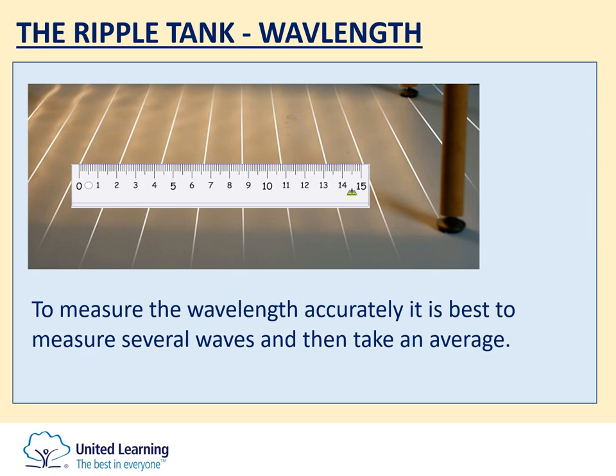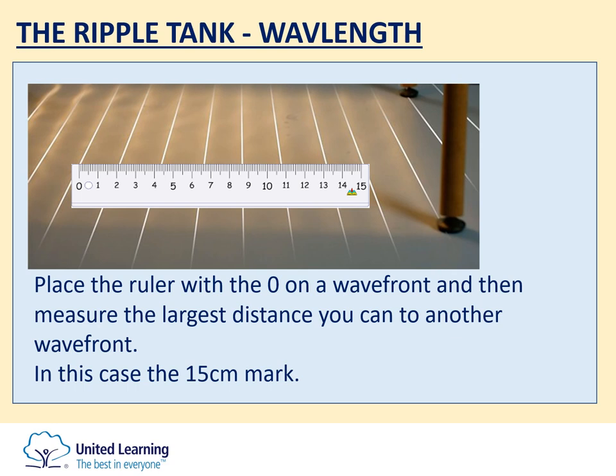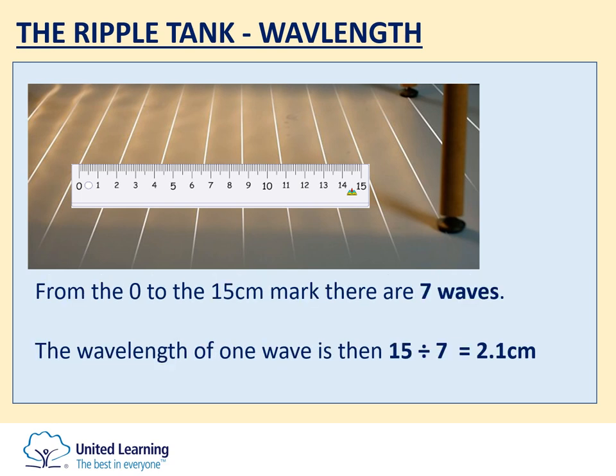If you take a snapshot with the ruler going across several wavefronts, you can pick a point where a wavefront crosses a nice easy-to-read value on your ruler — in this case there's one at zero — then go as far away as possible to another easy-to-read number. In this case there's one exactly on 15 centimetres. Once you know the distance for several waves, count up how many waves are between your first mark and your second mark — in this case there are seven waves from zero to 15. The distance for those seven waves is 15 centimetres, therefore the wavelength of one wave is 15 divided by 7, which is 2.1 centimetres.